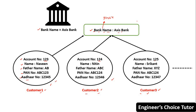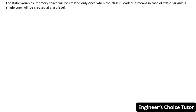Now let's discuss how we can access a static variable. For static variables, memory space will be created only once when the class is loaded, meaning a single copy will be created at class level. Static variable values are shareable — a single copy is created at class level and shared among every object. Static variables are shared across all instances of a class, and a single copy of the variable is shared among all objects.